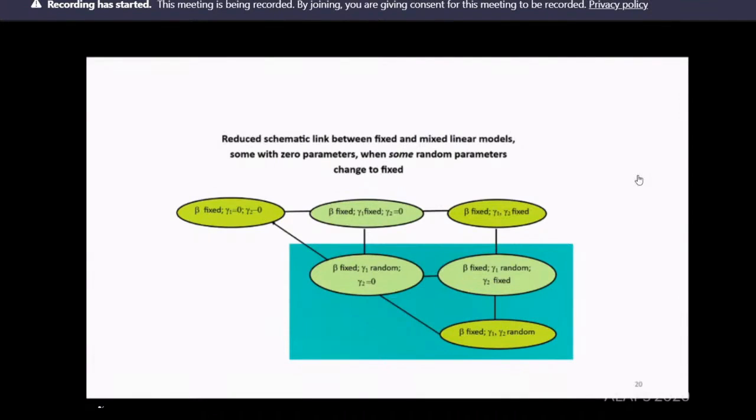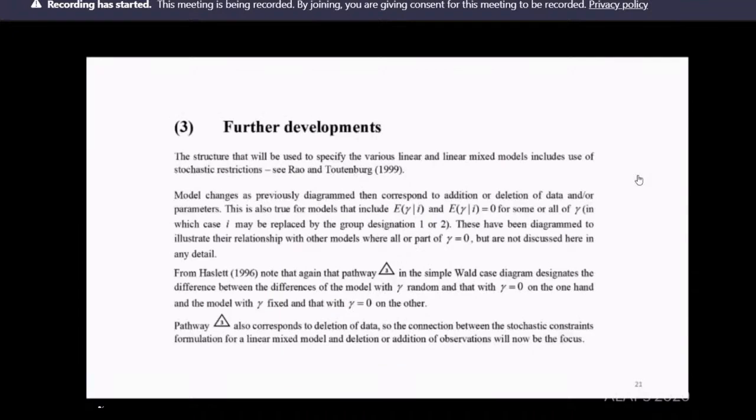What I'm going to focus on is part of that diagram. In fact, the ones I'll focus on almost entirely are the ones in the brighter green color, which is the original diagram. The other ones indicate the situation where part goes to random or part goes to zero. Those are the cases dealt with in the 1983 paper. I'm going to focus on the ones in the lime green color. Using stochastic restrictions, I'm putting aside some of these with E gamma given i equals zero. It's pathway three that corresponds to deletion of data. The connection between stochastic constraints and deletion of observations will now be the focus.